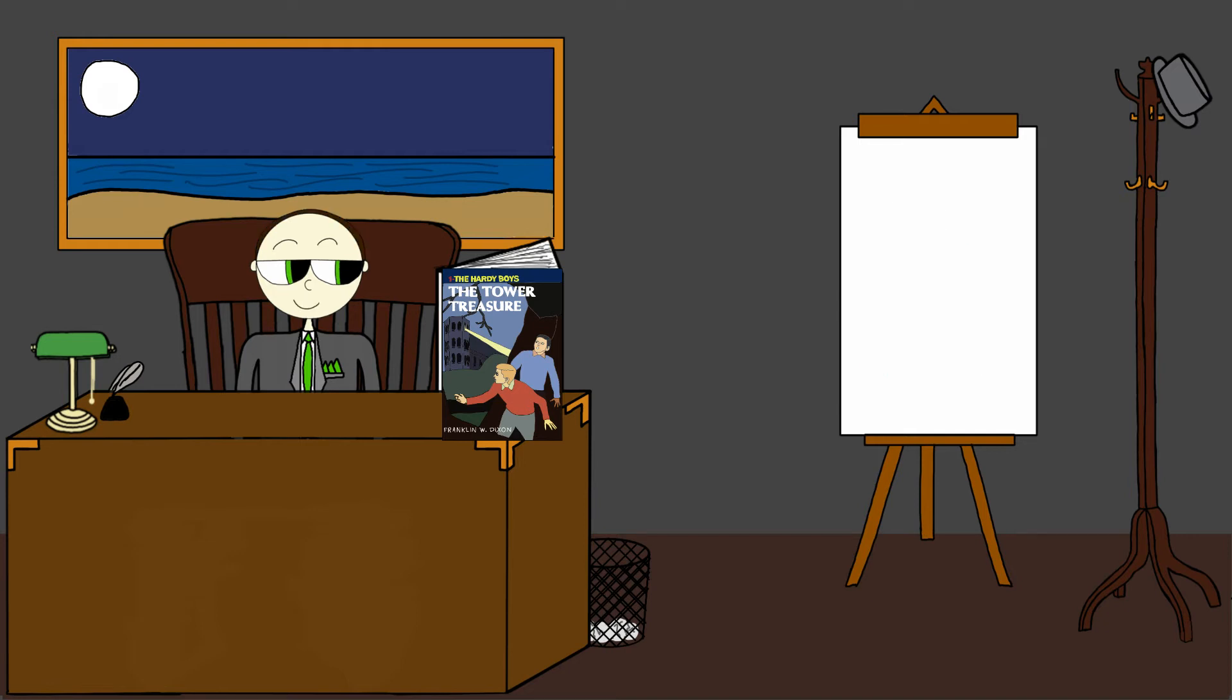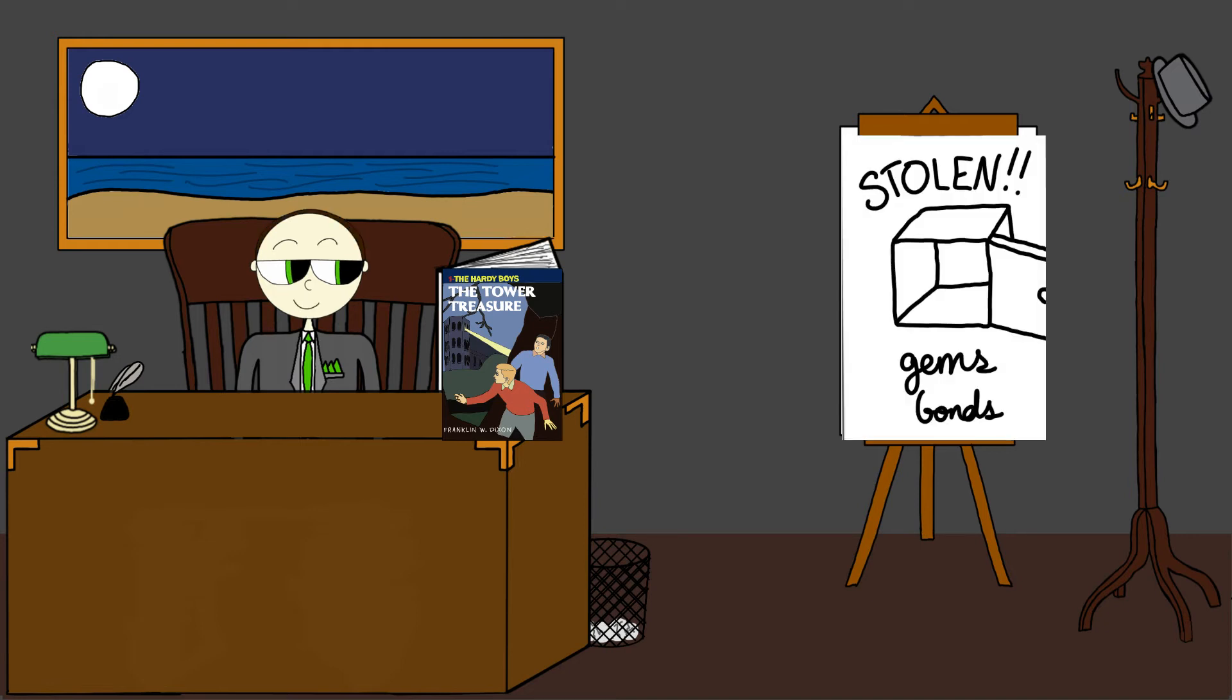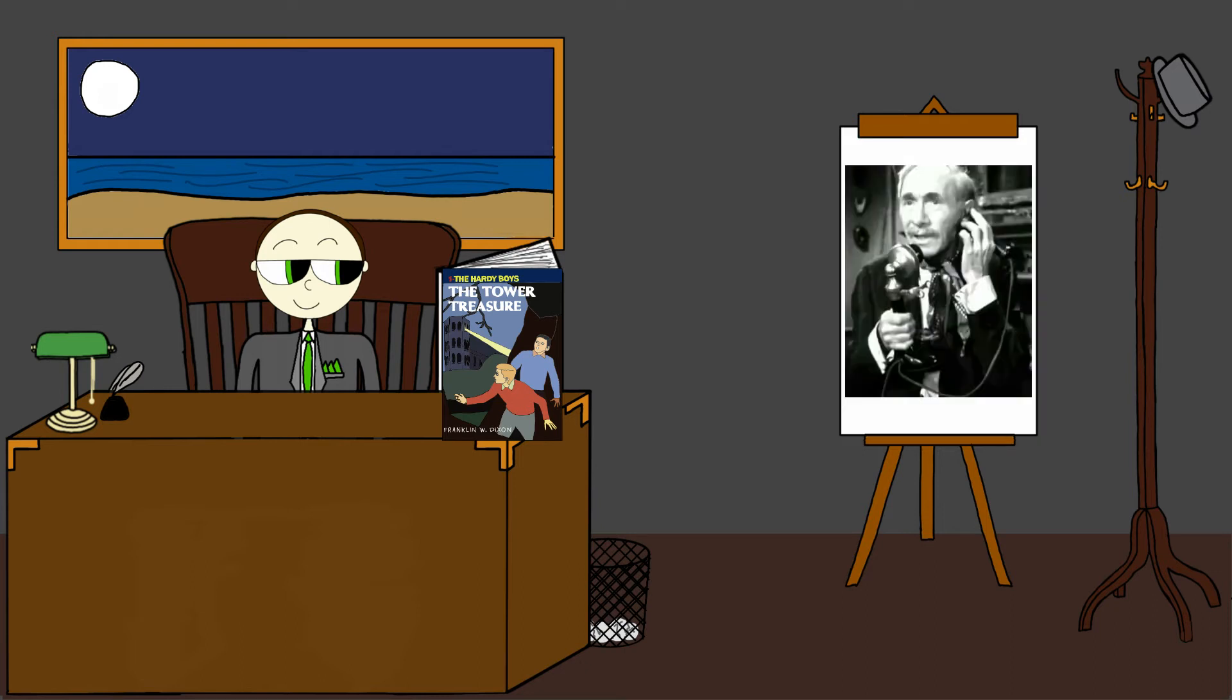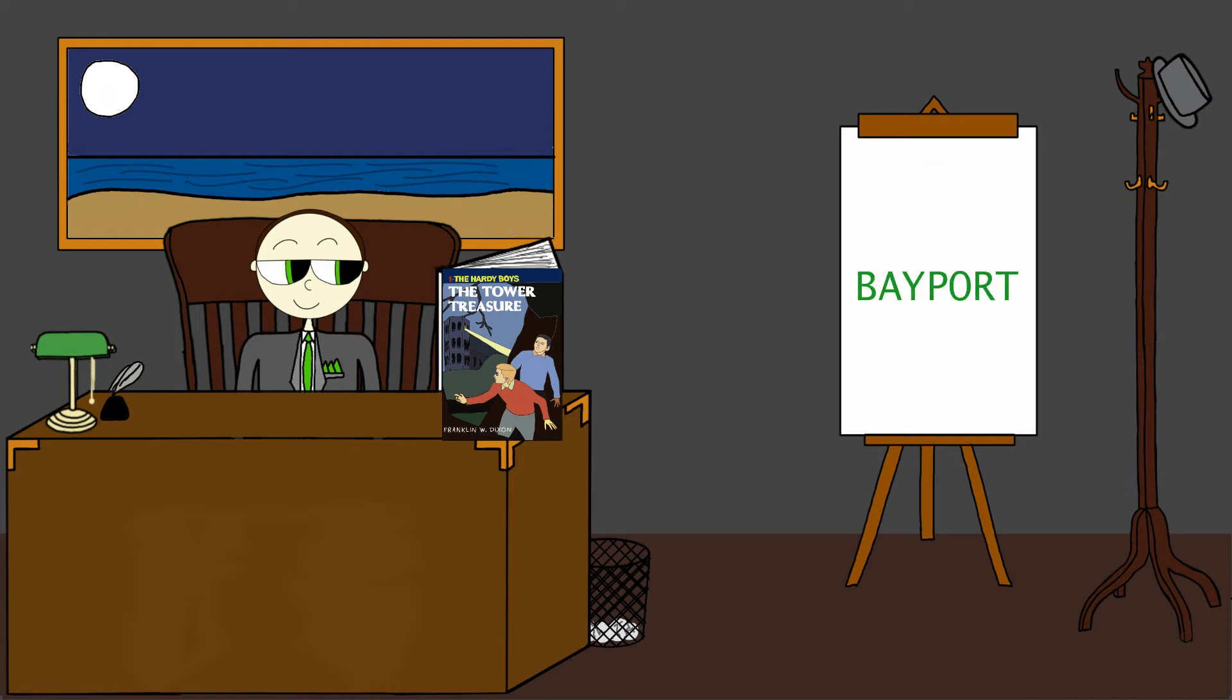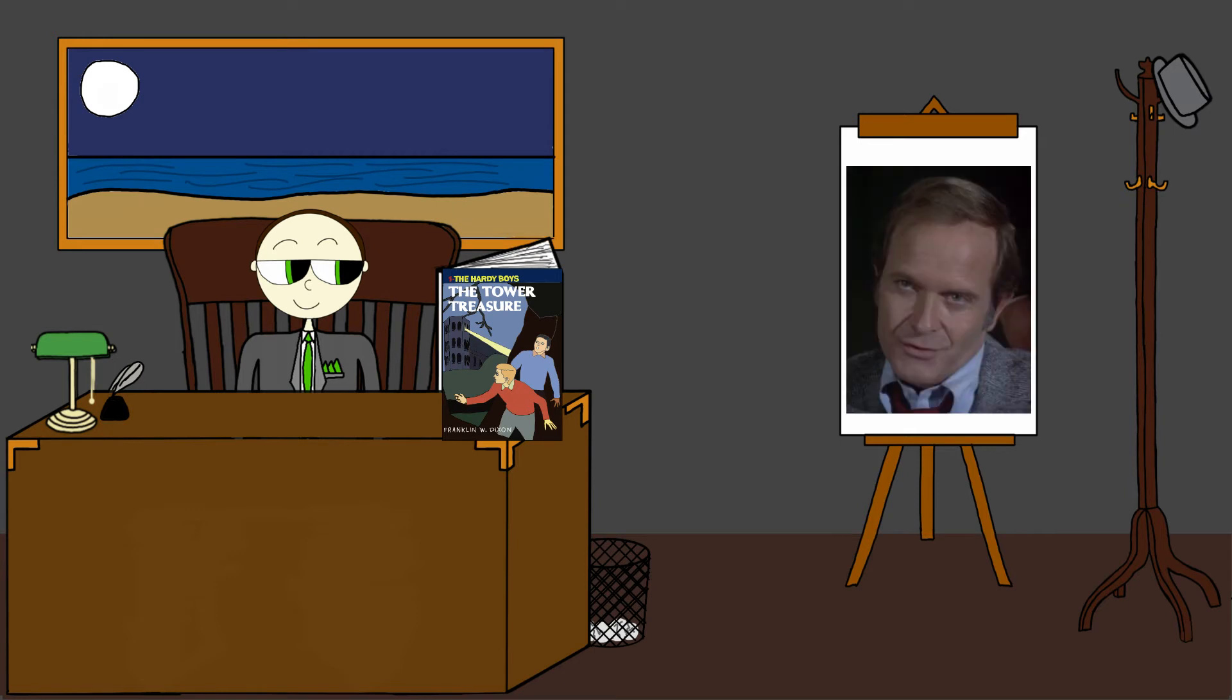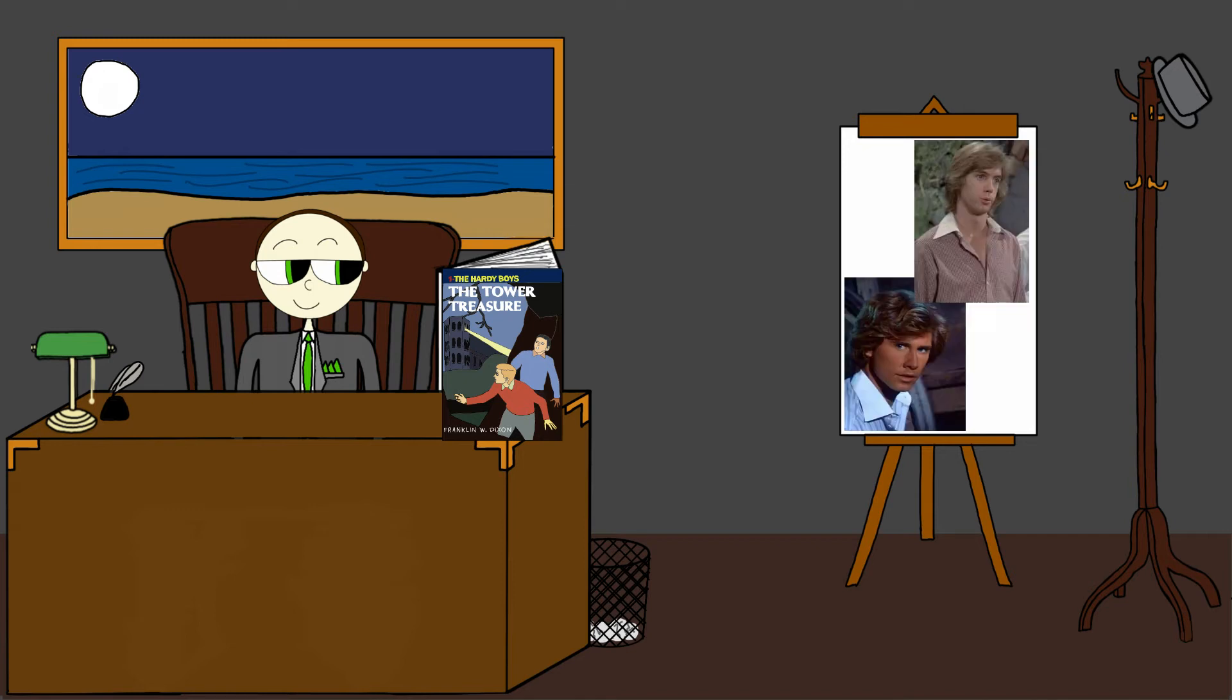The Tower Treasure has a relatively simple plot, focusing on a robbery of gems and bonds from the safe of Mr. Hurd Applegate and his sister Adelia, who own the Tower Mansion, one of the skyline buildings of the small town of Bayport, where the Hardy's live. The Hardy Boys' dad, Fenton Hardy, is brought in to help solve the case and recover the stolen valuables, and enlists his sons' help.